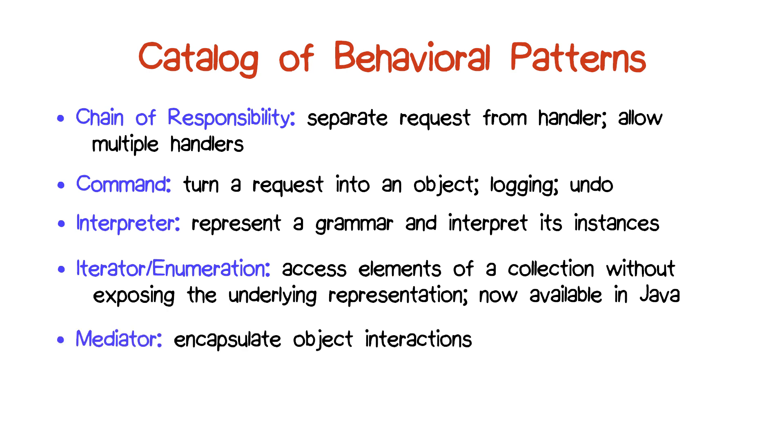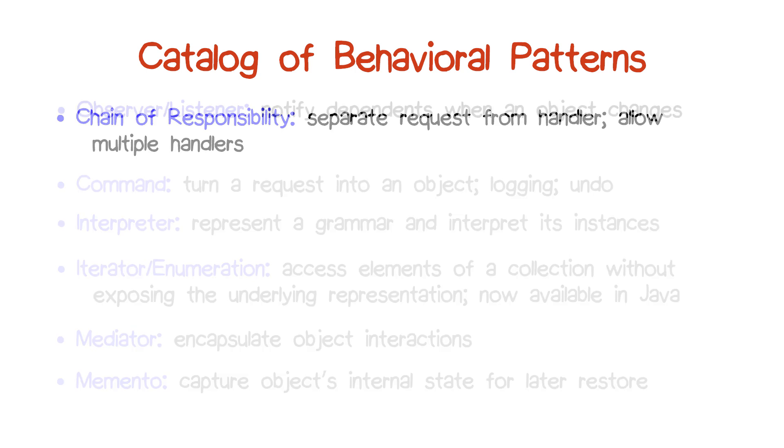The mediator pattern is a powerful way of encapsulating object interactions into an object. The memento pattern captures an object's internal state for later restore. Think here about undo and redo. You want to capture the state so you can go back to it if you do an undo.